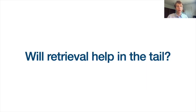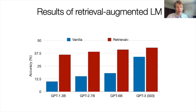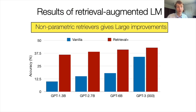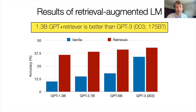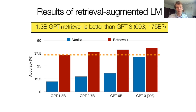What about retrieval? Will retrieving documents from the web and including them in the language model context help with tail performance, where scaling has been shown ineffective? This simple retrieval-based prompting indeed gives us huge performance improvements across models, especially smaller language models. In particular, a 1.3 billion parameter GPT-Neo with retrieval can beat the vanilla GPT-3. More and more recent papers also confirm such trends across different knowledge-intensive tasks.